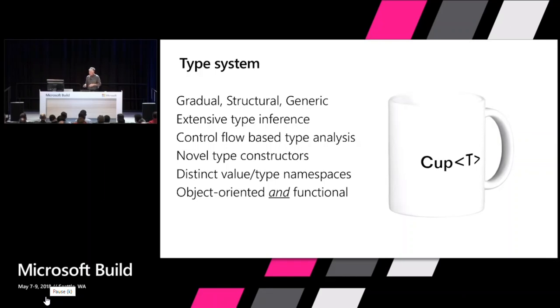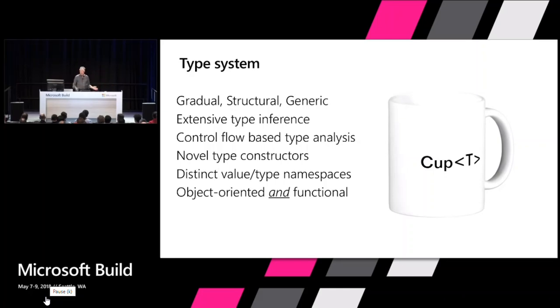That means your programs are never going to behave in an unpredictable manner no matter what you do. Because that is the case, it's actually fine to have a type system that doesn't prove everything to be sound. Once you do that, all of a sudden you can explore all sorts of new areas that no one has ever gone to before, and that's what makes this really interesting and really useful.